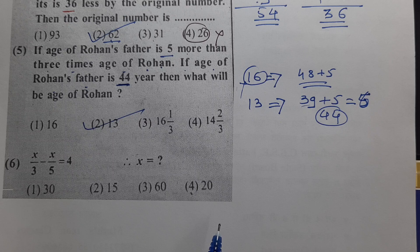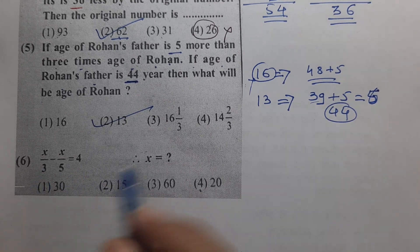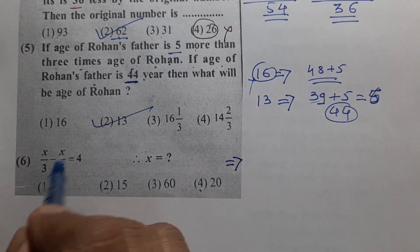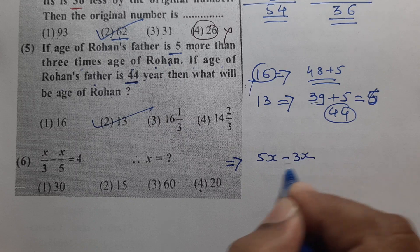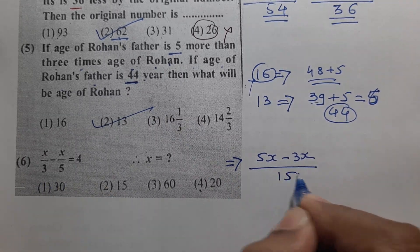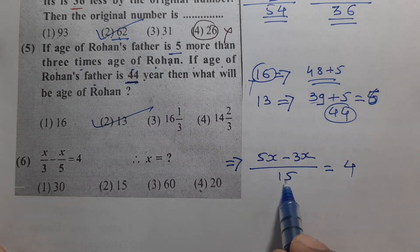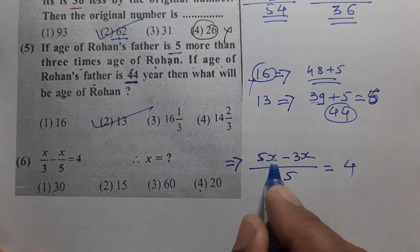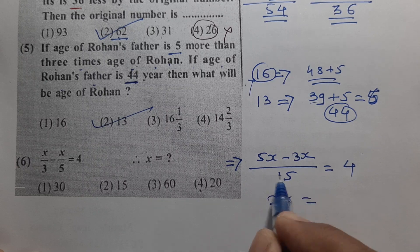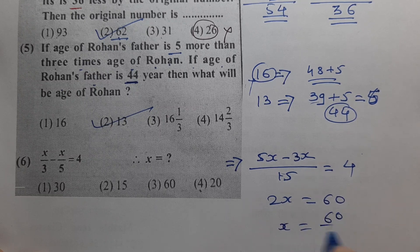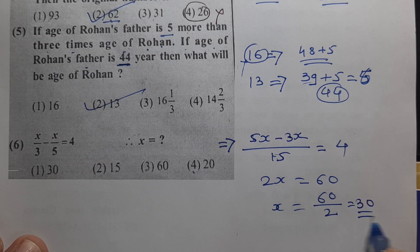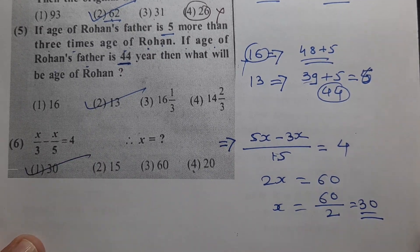Question number 6: Using cross multiplication, 5x minus 3x upon 3 into 5 equals 4 into 15. Simplifying: 2x equals 60 divided by 10, giving x equals 30. The answer is option number 1.